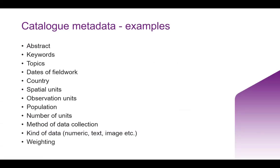Some of the metadata captured on UK Data Service catalog pages includes fields like the abstract, keywords and topics — all based on a standardized schema — dates of fieldwork, country, information about the sample including observation and analytic units, information about the population, the number in your sample, and information about the methods, kind of data, and weighting. All of this would come from a preselected set of categories.